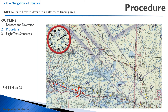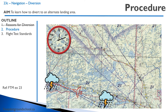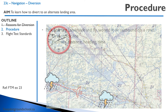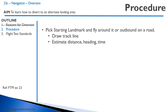So let's say here we are flying along — I have a clock on the top left just to give you an idea of time. As we're flying along, there happens to be a thunderstorm ahead of us and we're not going to get where we want to go. There are thunderstorms behind us too. So the first thing we're going to do is pick a starting landmark and either fly around it or outbound on a road or other straight landmark, then draw a track line.